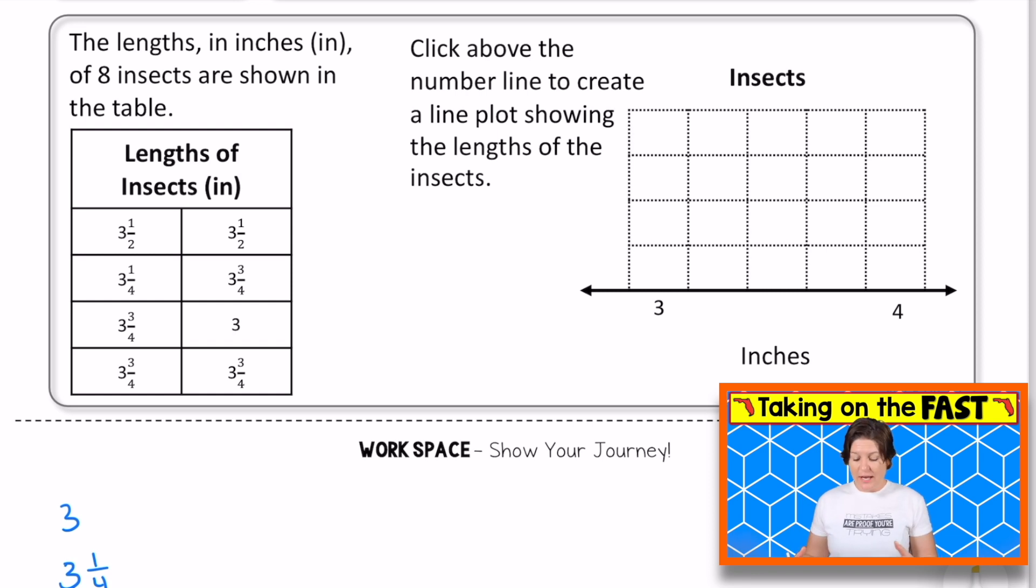Our final question today for day one is the graphic response item display question. Now for these, it looks like we're going to be clicking on the number line. But let's read it. It says that the lengths in inches of eight insects are shown in the table. So we've got eight insects shown right in here. Click above the number line to create a line plot showing the lengths of the insects. So we can see it's between 3 and 4. And down here will be our fractions, which would be 3 and 1/4, 3 and 2/4 or 3 and a half, and 3 and 3/4.